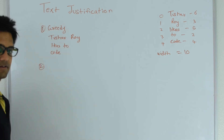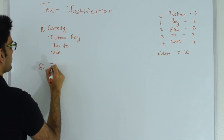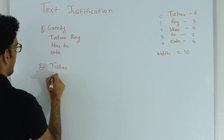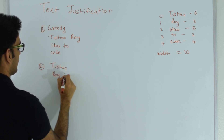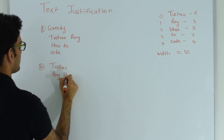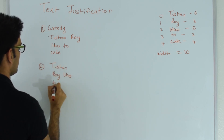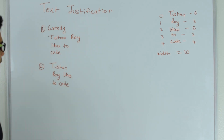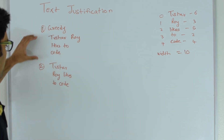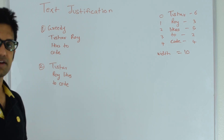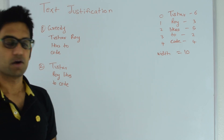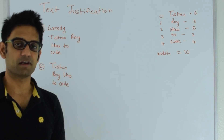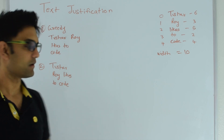Let's look at another alternate arrangement: Tushar, Roy likes, to code. So we have 2 arrangements, and the question is which of these arrangements distributes the empty spaces evenly over multiple lines.